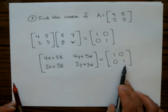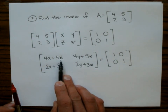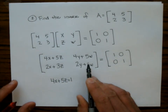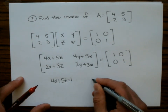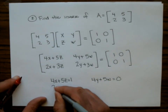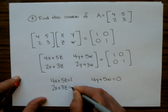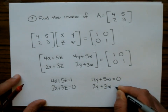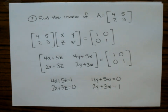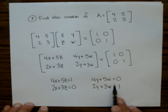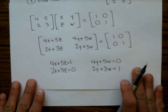These two matrices are equal, which means the corresponding entries are equal. So I set: 4x + 5z = 1, 4y + 5w = 0, 2x + 3z = 0, and 2y + 3w = 1. The left-hand equations are just x's and z's, and these two are just y's and w's, so we can solve each system separately.